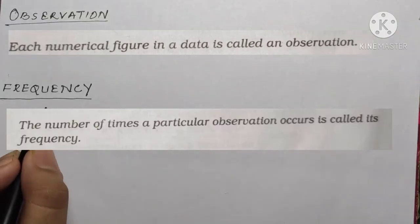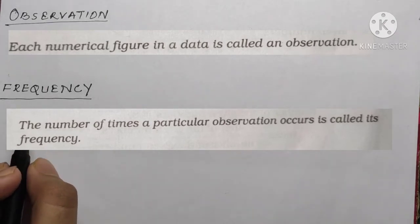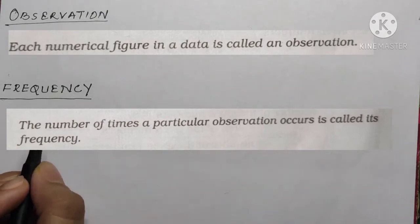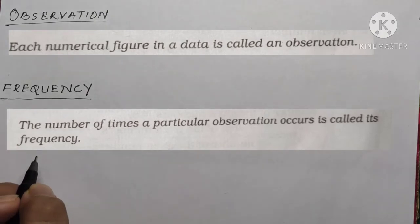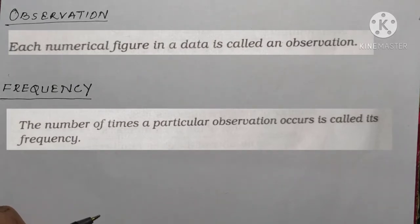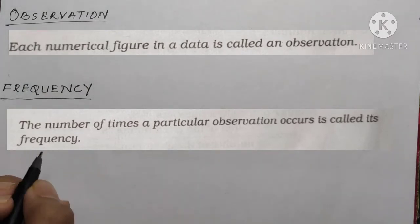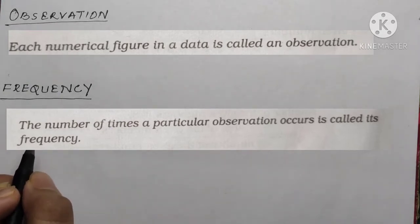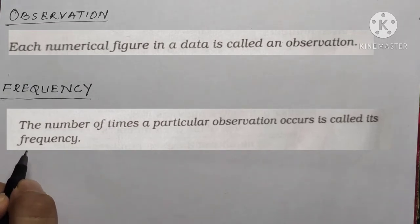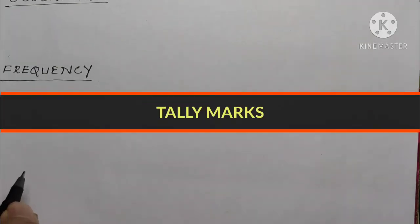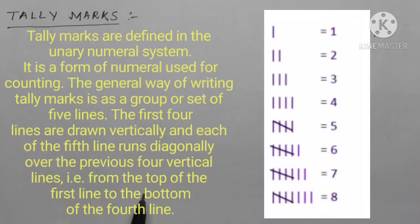Our next topic is frequency. Frequency is the number of times a particular observation occurs - that is called its frequency. The frequency of a particular data value is how many times it occurs. For example, if four students have scored 80 in mathematics, then this score of 80 is said to have a frequency of four.